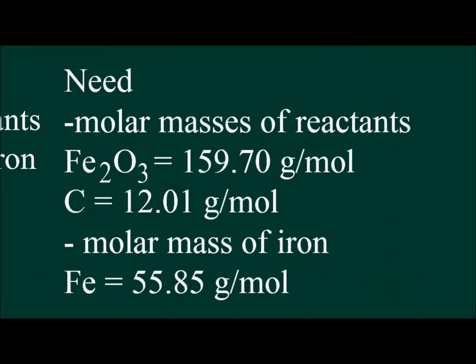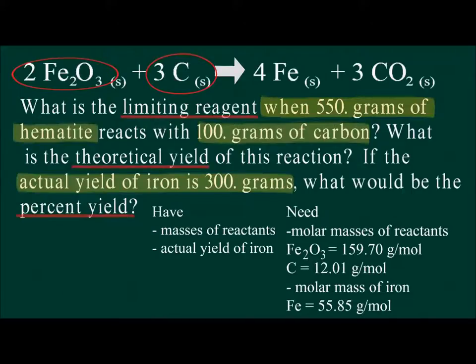We need to gather some information that is missing from the problem, such as the molar masses of hematite, carbon, and iron. We also need the formula for percent yield.